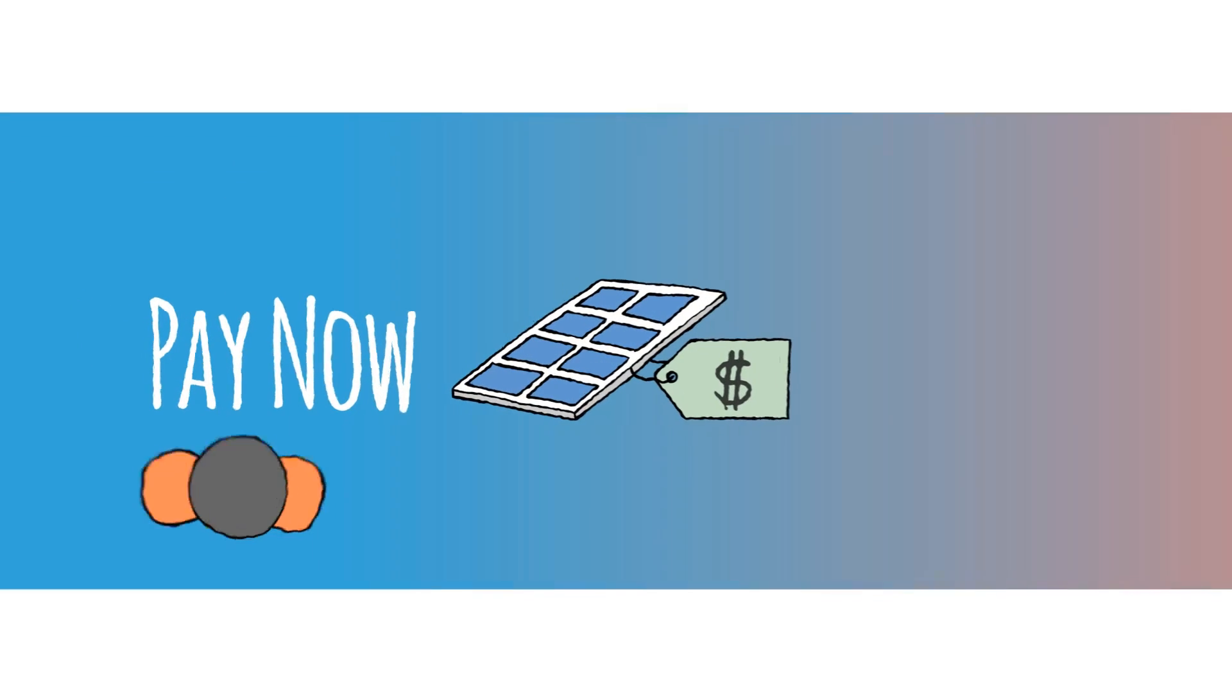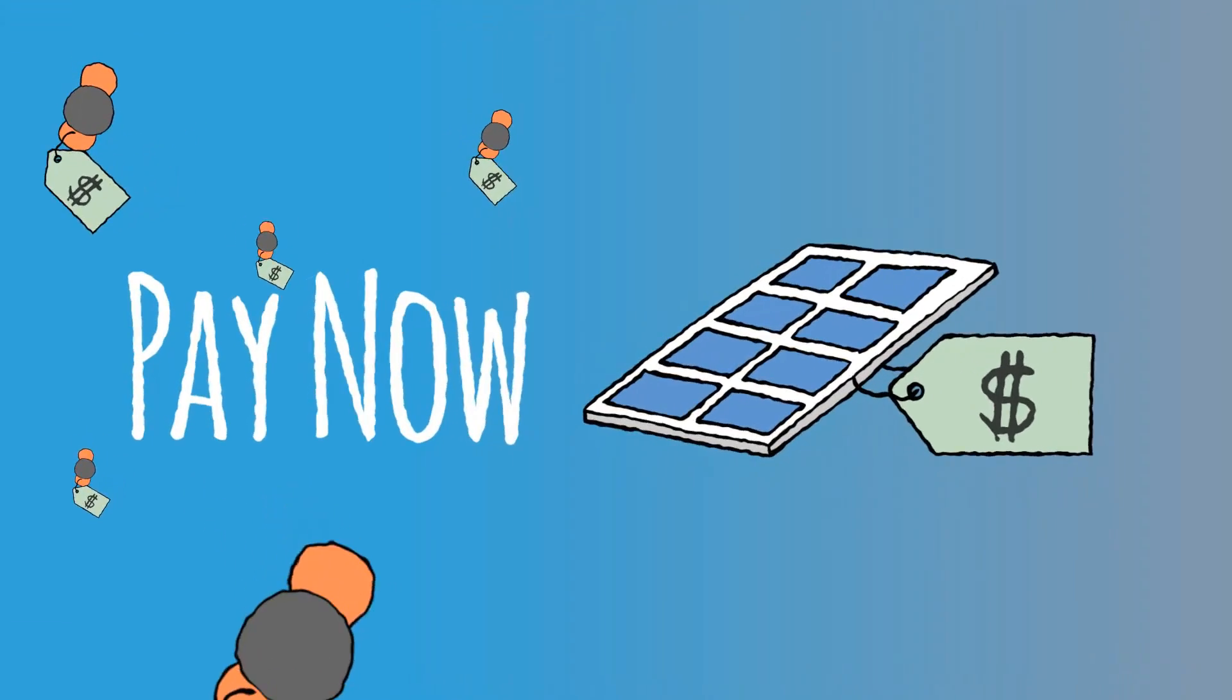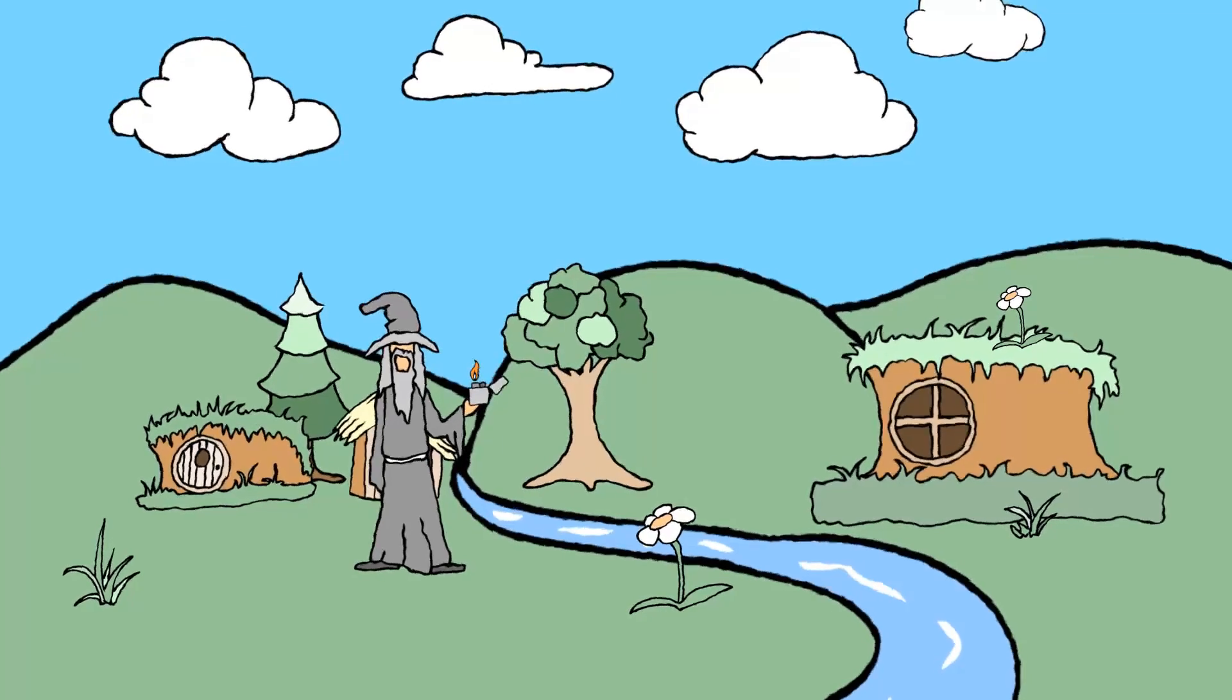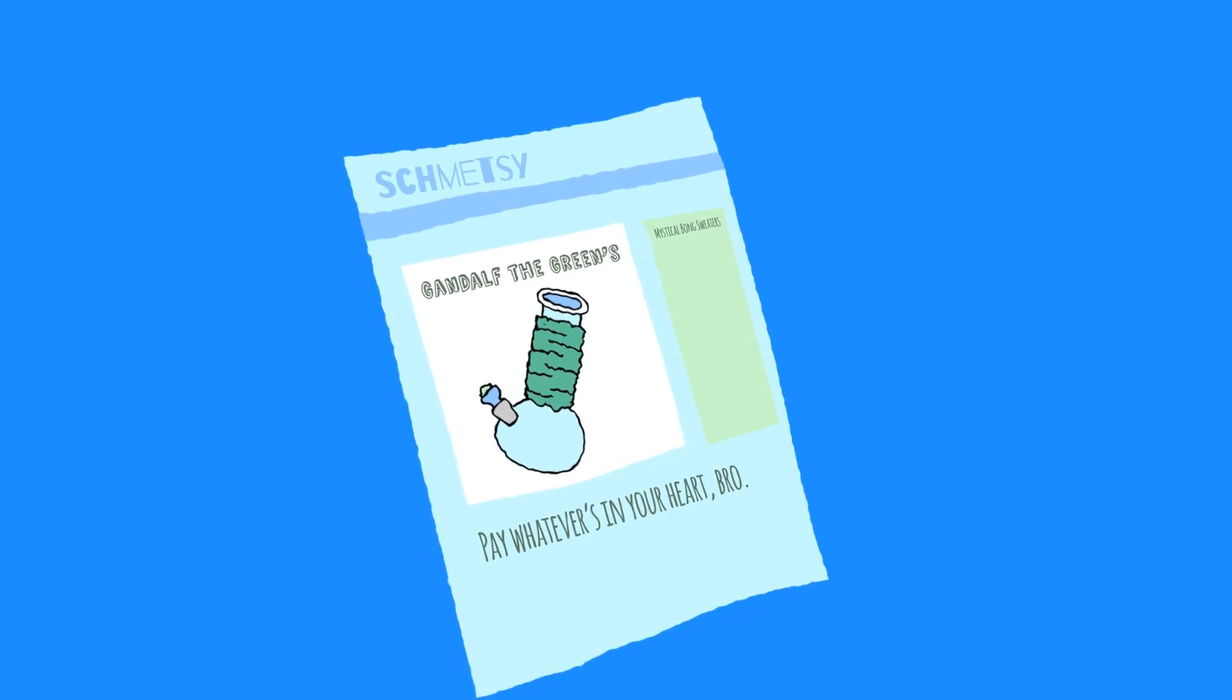On one end of the scale, we make emitting carbon expensive, which makes it more affordable to build out our sweet solar infrastructure, but also means we'll need to live in hobbit houses heated by our own flatulence, and spend our free time holding hands and making awesome hemp sweaters for our bongs.